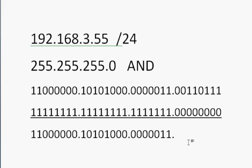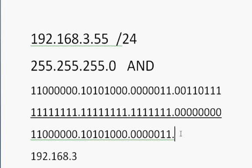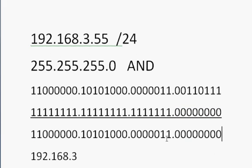When we get to this last octet, notice these are all zeros in the subnet mask. So everything ANDs to 0 — a true AND a false makes 0, and 0 AND 0 makes 0. We find that the network is 192.168.3.0. That is the network the router is going to route to. This is the process of why it's important to understand how binary works.